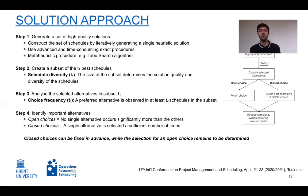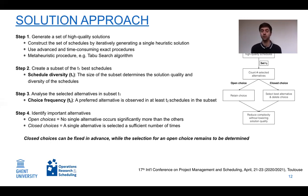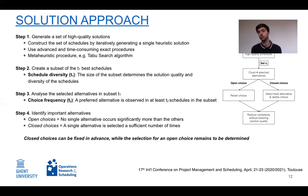Once this is done, we distinguish between open choices and closed choices. In an open choice, no single alternative occurs significantly more than others for a work package — that is, no alternative's frequency exceeds the required threshold T2. In a closed choice, one alternative's frequency does exceed T2, meaning it is selected often enough to be labeled a preferred alternative.